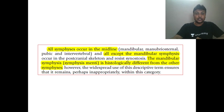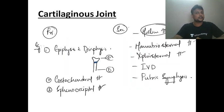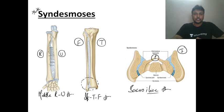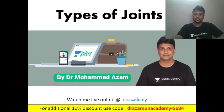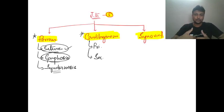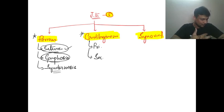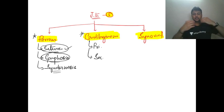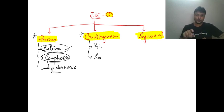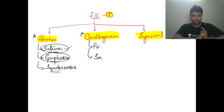That completes the fibrous and cartilaginous joints with all subtypes and examples, including the clarification of the symphysis menti. Regarding a comment about the manubrium and rib — the joint between the sternum and the rib is actually a synovial joint of plain variety, which will be discussed tomorrow.